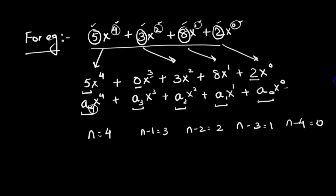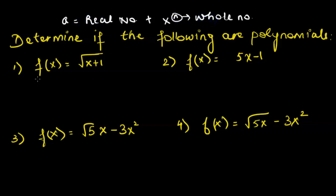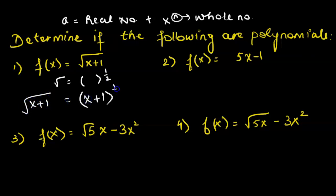Now let's determine if given functions are polynomials. We check whether the constants are real numbers and whether the powers of x are whole numbers. In the first function, the entire expression (x + 1) is under a square root, meaning (x + 1) has a power of one-half — not a whole number — so this is not a polynomial function.